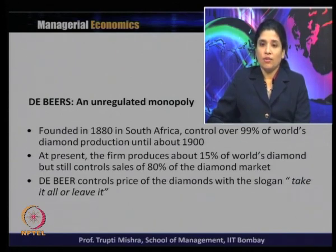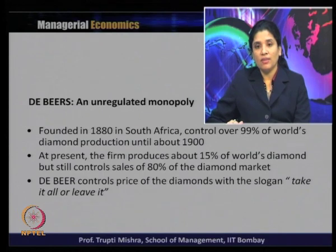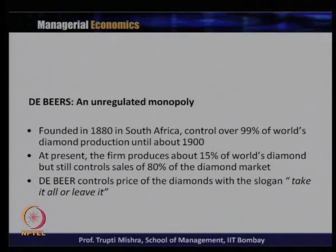De Beers controls the price of diamond with the slogan 'take it all or leave it.' They follow a price rigidity and are not going to reduce the price in order to increase quantity demanded. Their philosophy is that it is up to the buyer whether they are ready to buy at that price or not. Even when they were not controlling production, they control the market through the sale of 80 percent of the total share of the diamond market — producing 15 percent but selling more than 80 percent, emerging as a monopoly in the market.